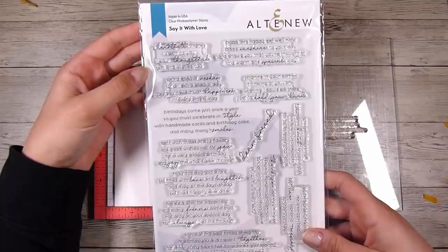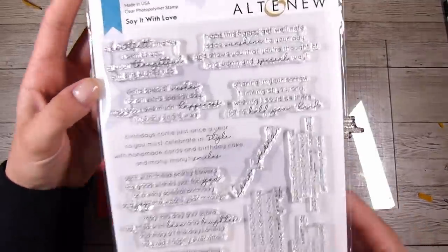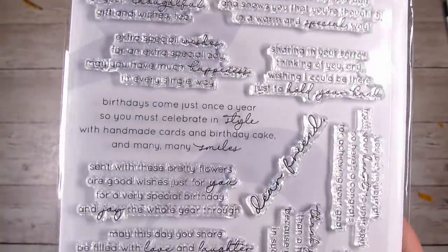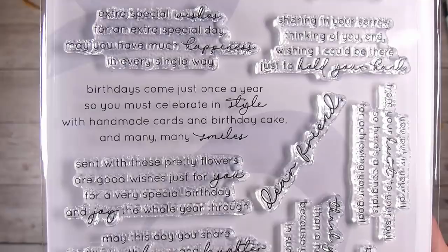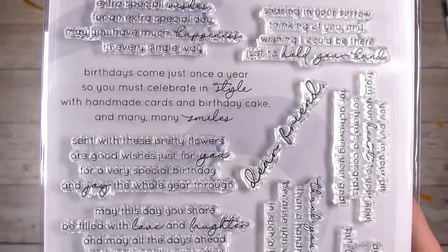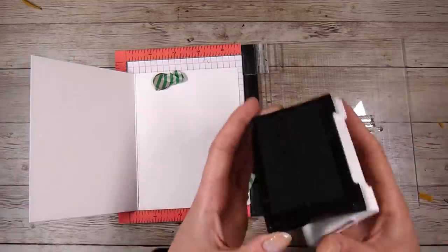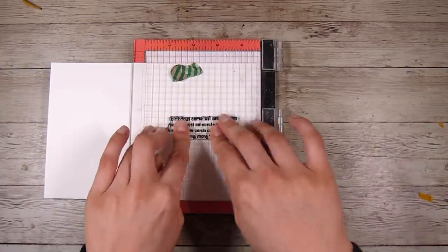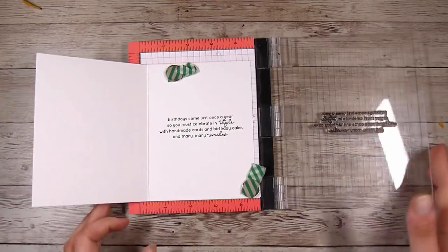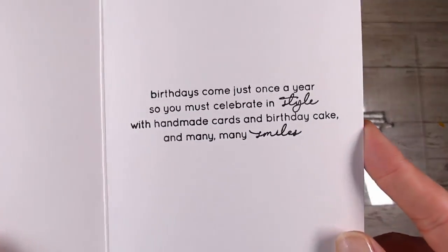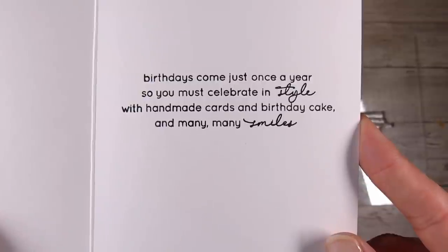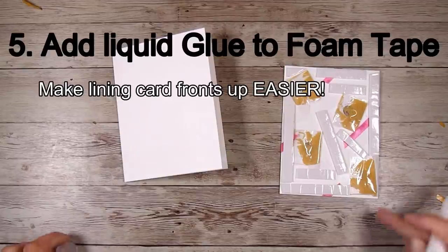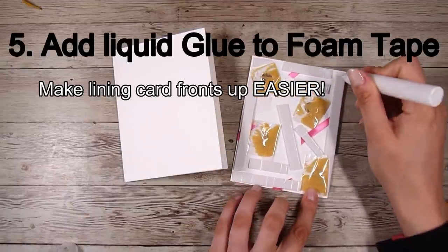Now in the middle of my card, I recently got this little Altenew stamp set here. Now this is Say It With Love and this has so many sayings for the insides of my cards. I've decided to step it up recently a little bit with adding things to the insides of my cards. And I like this stamp set because it has all occasions. It has sympathy ones, birthday ones, celebration ones. It has everything and not just one theme. And so if I'm going to invest in a stamp set like this, I really want to make sure that I have lots of themes covered.